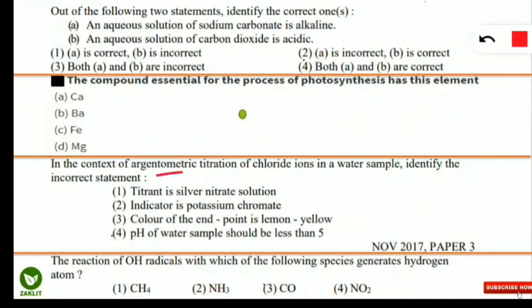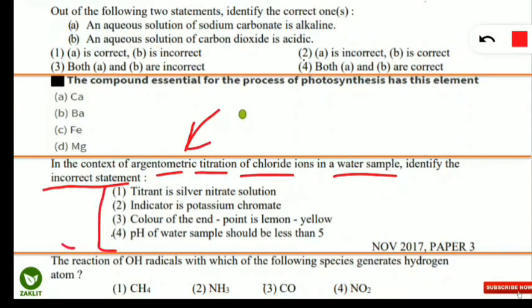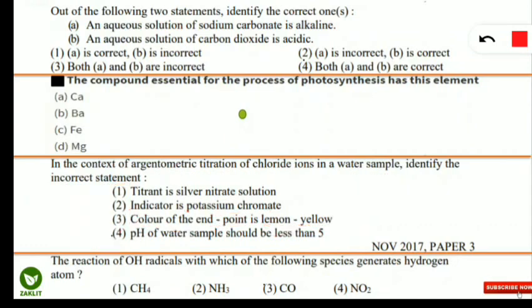The next question is about argentometric titration of chloride ions in a water sample — identify the incorrect statement. In this titration, the titrant is silver nitrate solution, the indicator is potassium chromate, and the color of the endpoint is lemon yellow. However, the pH of the water sample should be more than 6.5, not as stated in option 4, which is the incorrect statement.